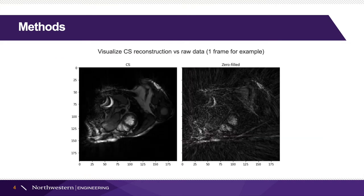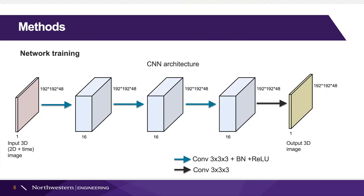On the left is the CS reconstruction data, and on the right is the raw data. These data sets are then used to train our CNN network.